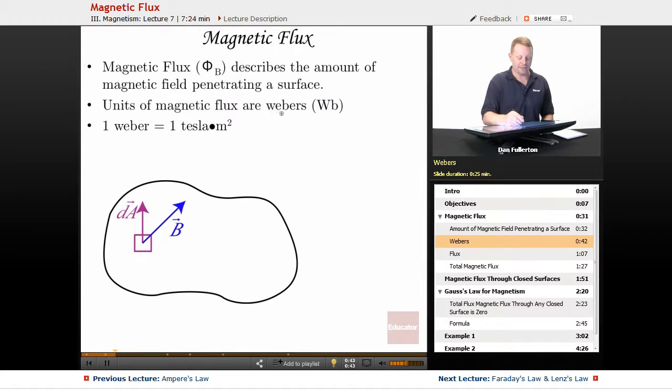The units of magnetic flux are Webers, typically written capital W lowercase b, where one Weber is one tesla meter squared.